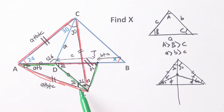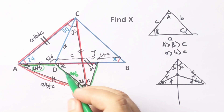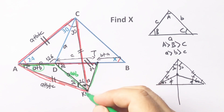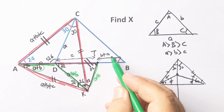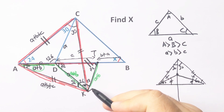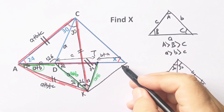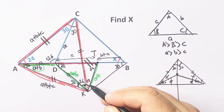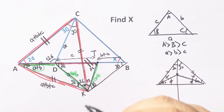This length is a plus b, and this length is also a plus b. That means if we connect these two points, we get a plus b — and we get an isosceles triangle. So these angles must be 36 degrees.